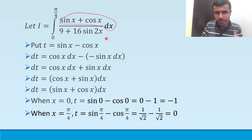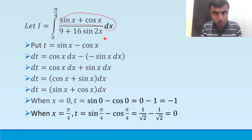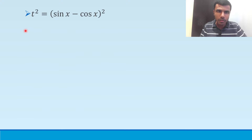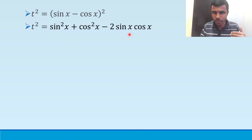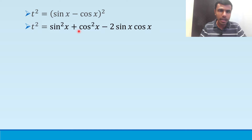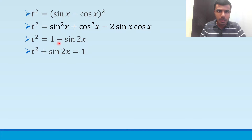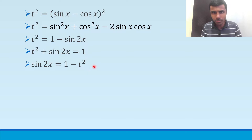In the denominator we have 9 + 16 sin 2x. I want to convert this to something in terms of t. To do that, square both sides of t = sin x minus cos x. Expanding using (a - b)² = a² + b² - 2ab gives t² = sin²x + cos²x - 2 sin x cos x = 1 - 2 sin x cos x = 1 - sin 2x. So sin 2x = 1 - t².